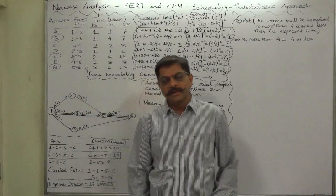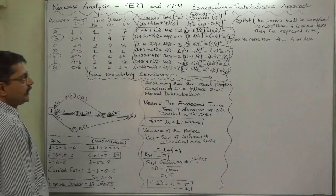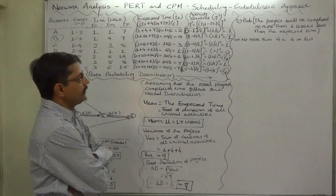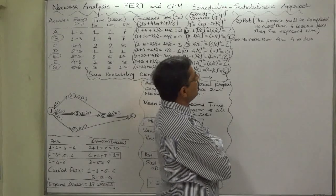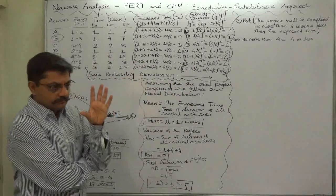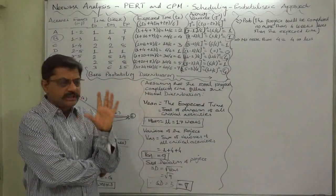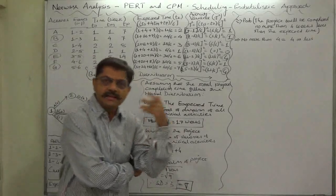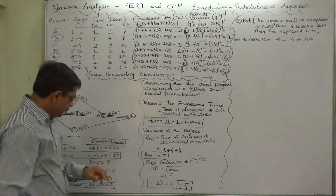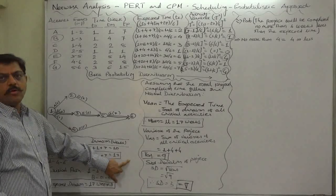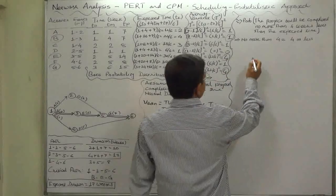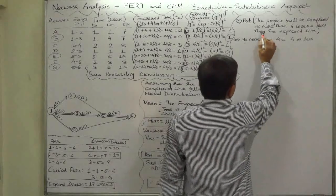Hello namaskar and welcome to network analysis part probabilistic approach. Now we are interested in finding the probability that the project will be completed no more than four weeks later than the expected time. What is the probability that the project is completed later than the expected time but no more than four weeks later? That means 17 plus 4 equals 21, but no more than 21 weeks. Let's make the calculation.